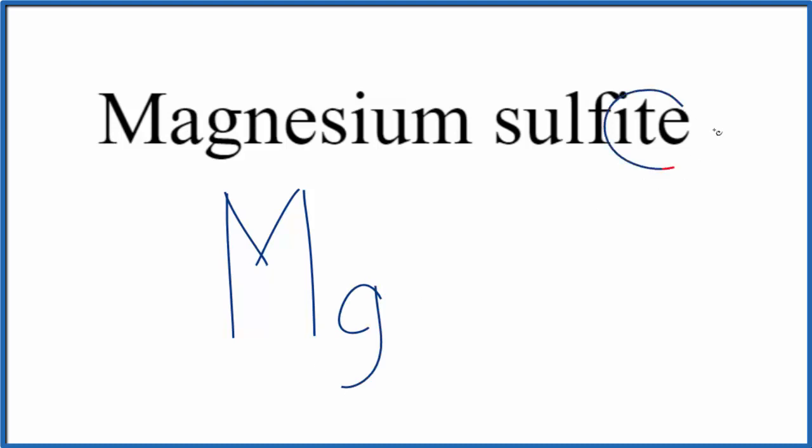For sulfite, when you see ITE, you're not going to find that on the periodic table. That means it's a polyatomic ion.